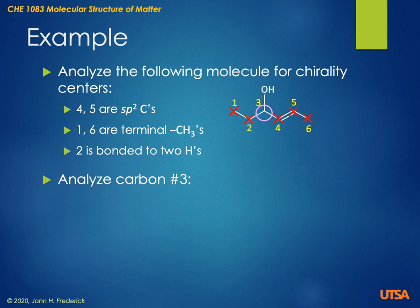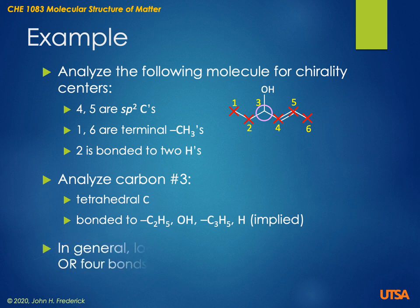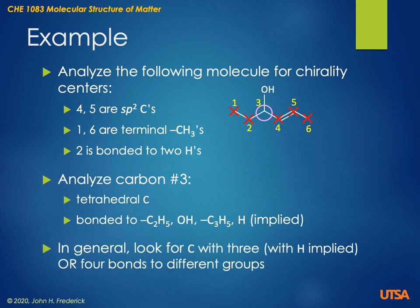We need to analyze carbon three and determine if it is indeed bonded to four different groups. It is a tetrahedral carbon — it doesn't have any double bonds or triple bonds. It is bonded to an ethyl group, which is the C1–C2 fragment. It is bonded to an OH, and it's bonded to a C3H5 group, and it's bonded to an H. So it is indeed bonded to four different groups. H is implied in this case because we never draw the Hs in a bond line diagram. In general, you should look for a carbon with three visible bonds — with hydrogen implied — or with four bonds to different groups.